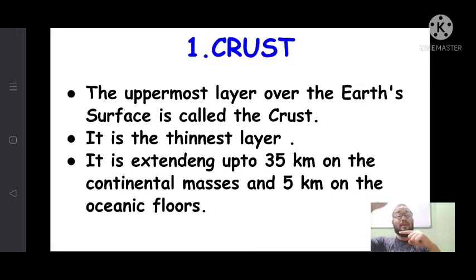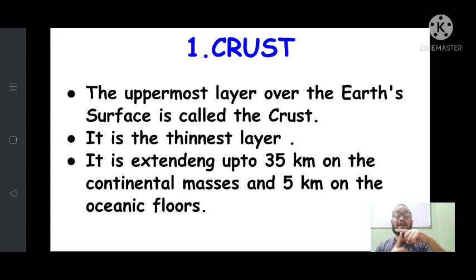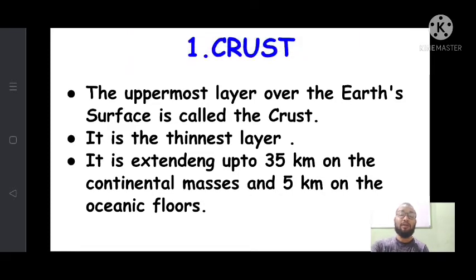Height is also measured from sea level. For example, 8,848 meters is the height of Mount Everest, measured from sea level. Sea level is zero; from zero it goes up for height, and from zero it goes down for depth. So for the layers inside our earth, depth goes downward from zero. The crust layer in the continental area goes from zero to 35 kilometers, and in the oceanic floor from zero to 5 kilometers.